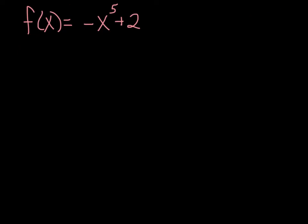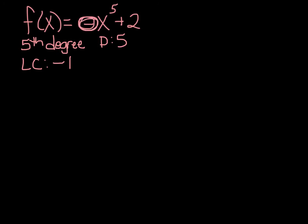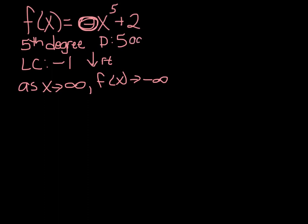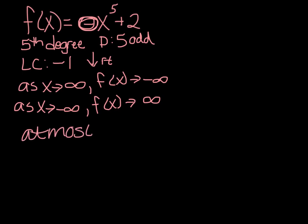Here we have f of x equals negative x to the fifth plus 2. This is fifth degree. The leading coefficient is negative 1 — that negative means the function goes down on the right. As x approaches infinity, f of x approaches negative infinity. The degree is odd, so opposite on the left: as x approaches negative infinity, f of x approaches positive infinity. And this would have at most four turns.